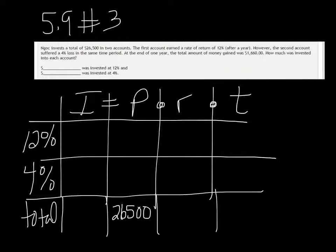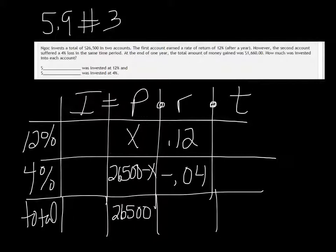But that helps us figure out what the other two are. If I just let one of them be X, then the other is going to be whatever is left over, so $26,500 minus X. The rate is easy enough to put in, we're going to get 0.12 here. But it was a 4% loss, so we're going to put negative 0.04 here. And then it just says one year, so time for both is going to be 1.